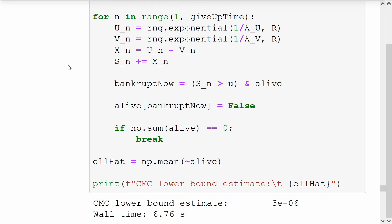We'll run our simulation claim by claim. We start by simulating the U_n's, the V's, and the X's, which is simply the difference, and adding that to our cumulative sum, the S_n.